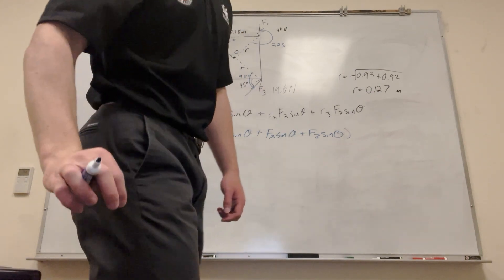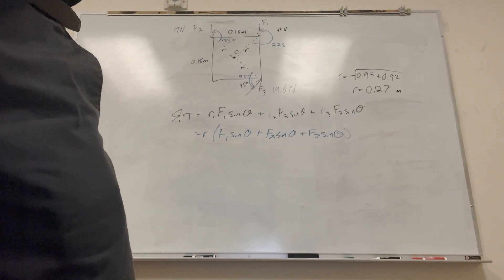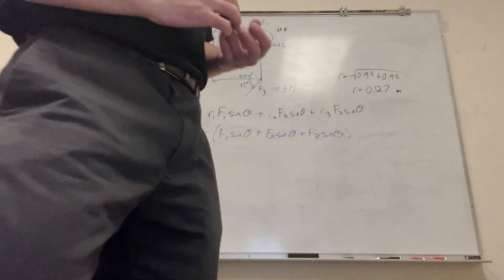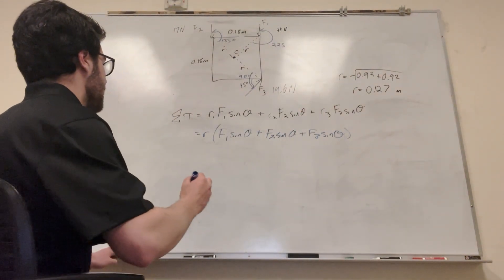Let me make sure that I got all those numbers right. So 135 is for the 17, yes. 225, yep, okay. Perfect. So we can pretty much just plug all this through equation now.